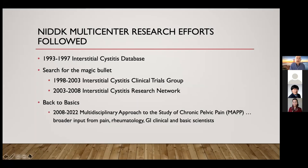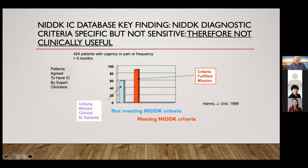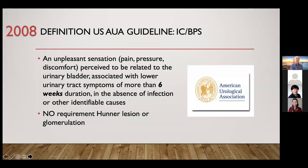When we started looking at the NIDDK database, we found that the NIDDK criteria did what they were supposed to do — 85% of patients who met the criteria, everyone agreed, had interstitial cystitis. But they missed a full 60% of patients who everyone felt had interstitial cystitis who did not fulfill the criteria. This showed that you cannot use the NIDDK criteria to diagnose the disease — it's only helpful for research studies. It really changed the way people started to think about the so-called NIDDK criteria for interstitial cystitis bladder pain syndrome.